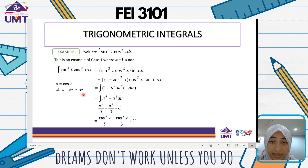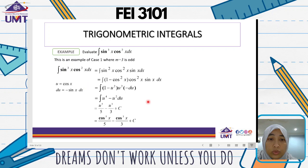Substituting u equals cos x, we get the integral of 1 minus u squared times u squared times negative du. Don't forget the negative sign — this is what we discussed in Case 1. Expanding, this becomes the integral of u squared times negative du, giving us u to the power of 4 minus u squared, integrated as negative quantity.